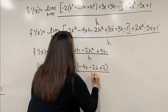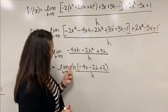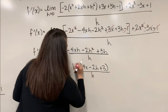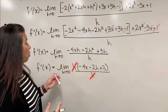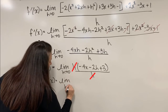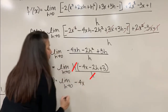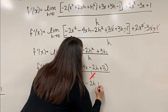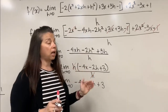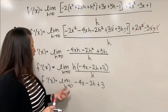All of that is still divided by the h in the denominator, but because we have h in the numerator and h in the denominator, the h's divide out. What's left is f prime of x equals the limit as h approaches 0 of negative 4x minus 2h plus 3. The algebraic simplification is now complete.